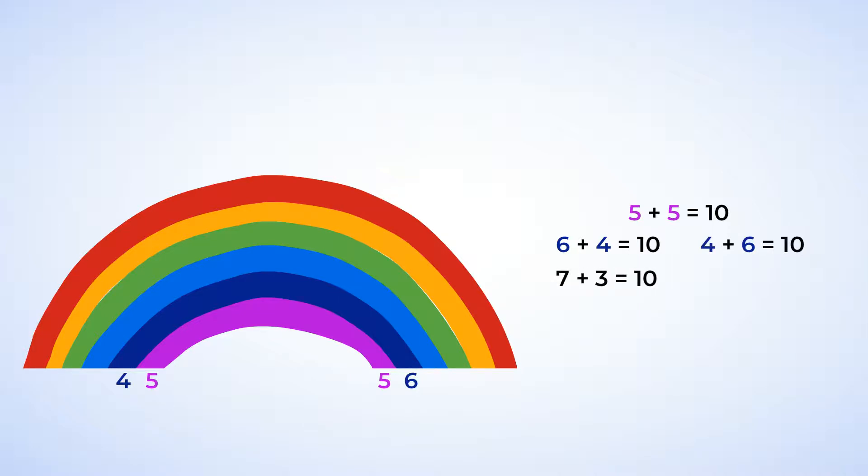Seven and three makes ten, and they get their own color of the rainbow. And you can look at it as three plus seven makes ten, or seven plus three makes ten. Next up, eight and two also makes ten. Up on the rainbow they go. Two plus eight makes ten, and eight plus two makes ten.